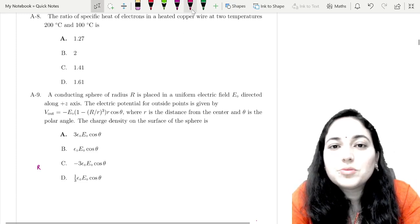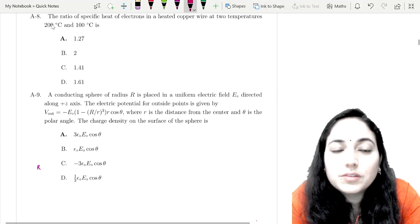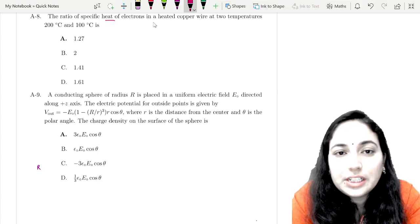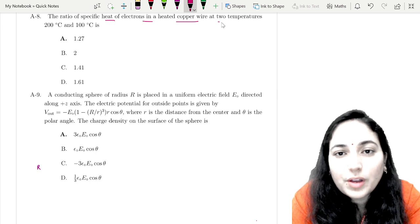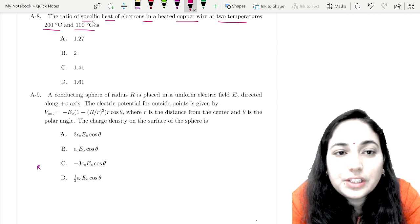Hello everyone, welcome to my YouTube channel Physics Queen, learn physics in the easiest way. The next question is about the ratio of specific heat of electrons in a heated copper wire at two temperatures, 200°C and 100°C. We're talking about specific heat ratio.